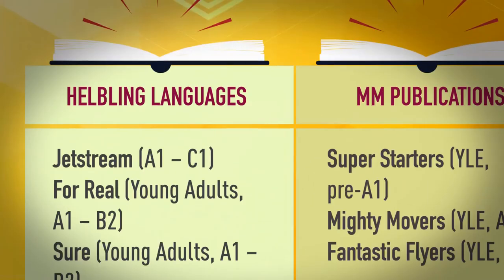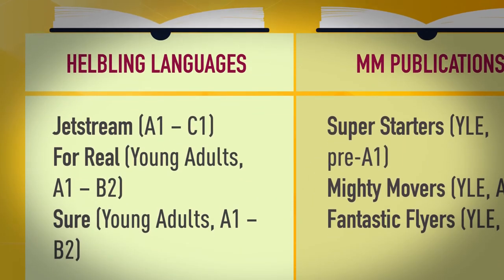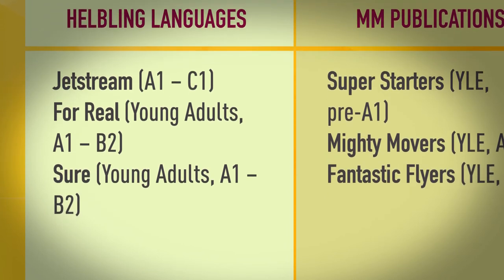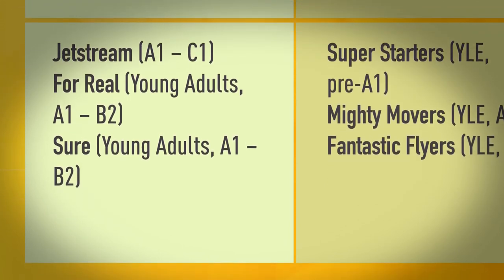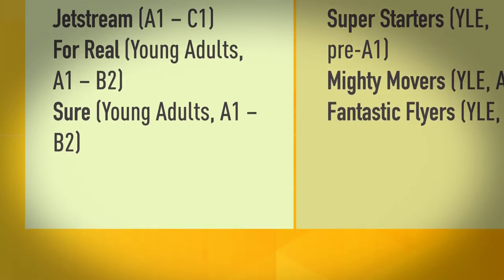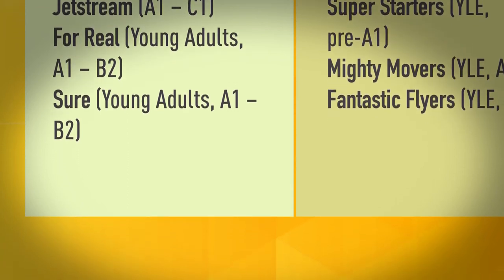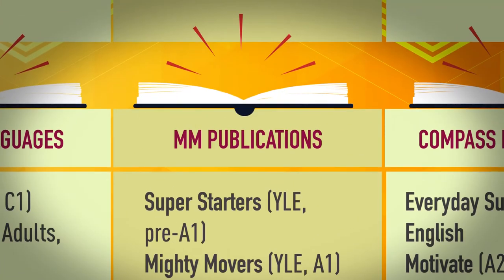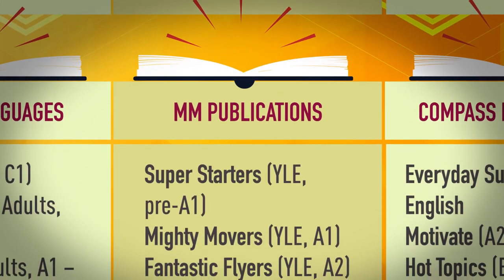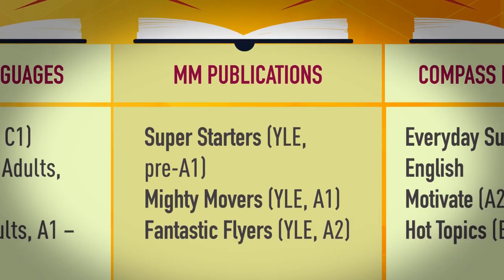Helbling Languages: Jetstream A1 to C1, For Real Young Adults A1 to B2, Sure Young Adults A1 to B2. MM Publications: Superstarters Young Learners Pre A1.